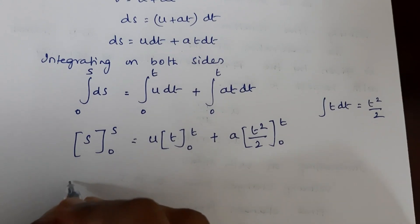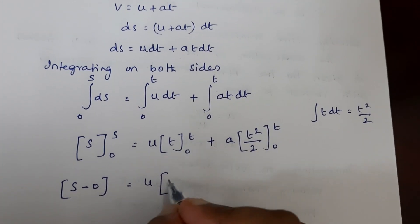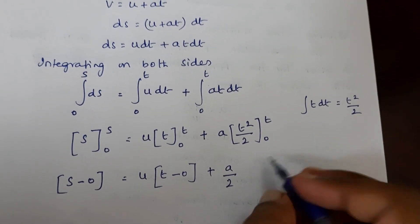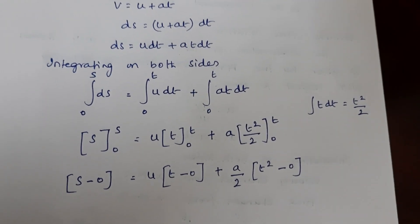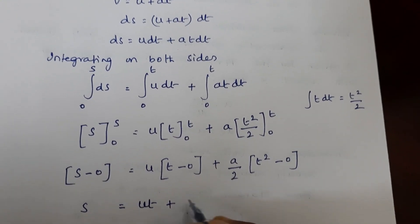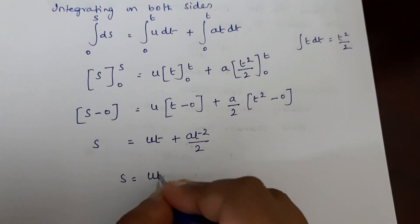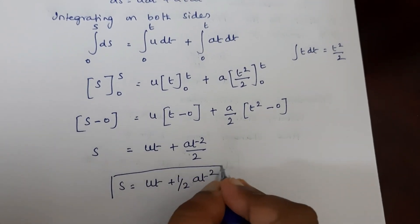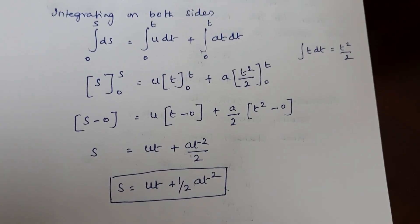Substituting the limits: s minus 0 is equal to u into t minus 0, plus a by 2 into t squared minus 0. So it is s is equal to ut plus at squared by 2, which can be written as s is equal to ut plus half at squared. Now we have obtained the displacement-time relation.